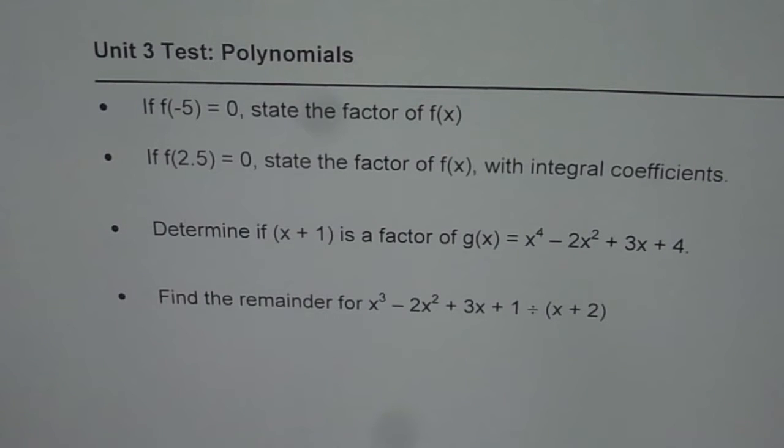Third one is, determine if (x + 1) is a factor of g(x) = x^4 - 2x^2 + 3x + 4. And the last question here is, find the remainder for x^3 - 2x^2 + 3x + 1 divided by (x + 2).